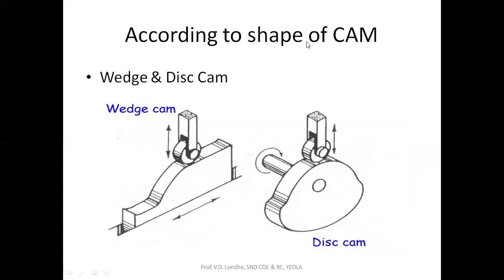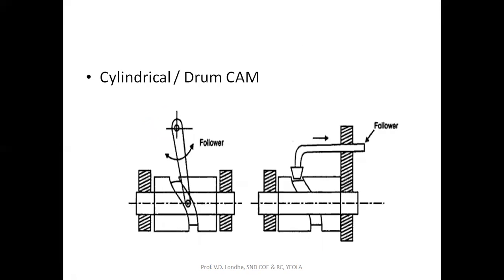CAMs are also classified according to shape. The WEDGE CAM has a translatory motion and the FOLLOWER has a reciprocating motion. The DISC CAM, also called the radial disc CAM, has a full rotary motion with the FOLLOWER having reciprocating motion. Next is the cylindrical or drum CAM, where depending on the application, the FOLLOWER can have either oscillating or translatory motion.